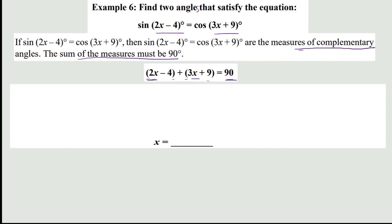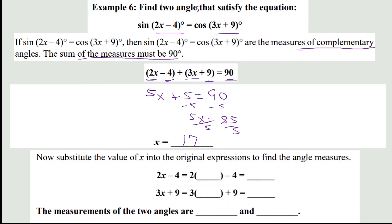Combining like terms: 2x + 3x = 5x, and −4 + 9 = 5, giving 5x + 5 = 90. Solving this two-step equation, we get x = 17. Substituting back: 2(17) − 4 = 34 − 4 = 30, and 3(17) + 9 = 51 + 9 = 60. The two angle measures are 30° and 60°, which correctly sum to 90°.